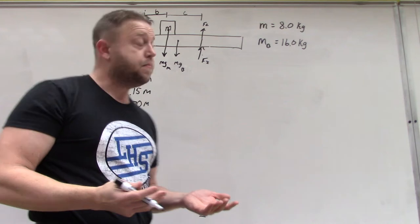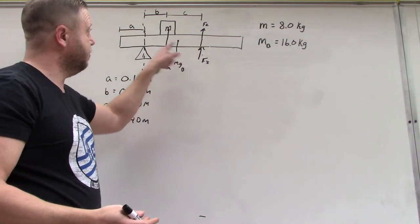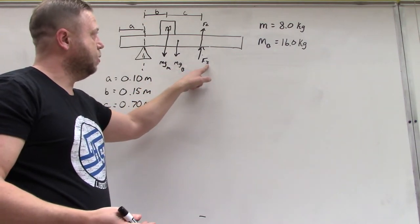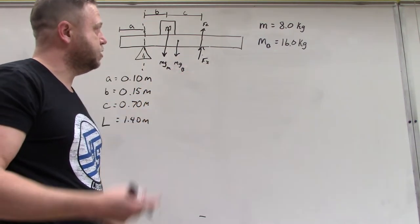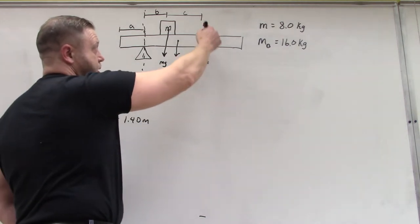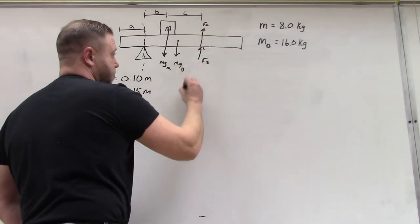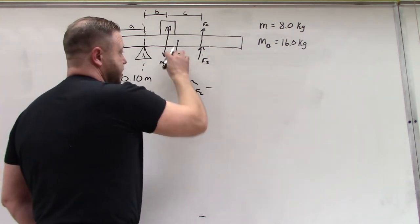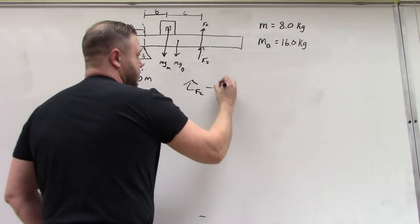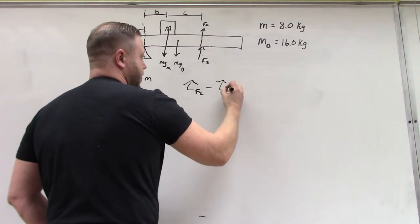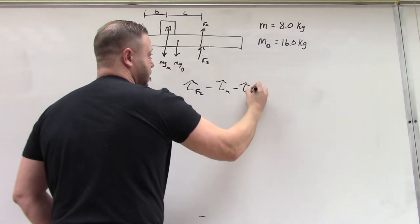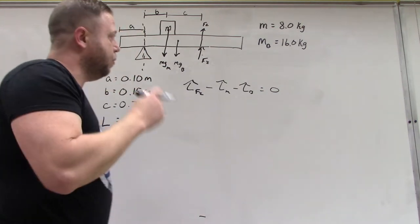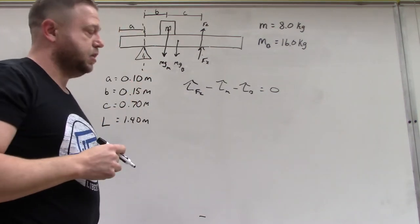Let's set up our torque equation. This is going to generate counterclockwise torque, so we're going to say torque for F2. These two are going to generate clockwise rotation: torque for the mass and torque for the beam. Remember, all of these are going to sum up to equal zero. The next step is we need to get all of our radius measurements set so we can fill in our equation.